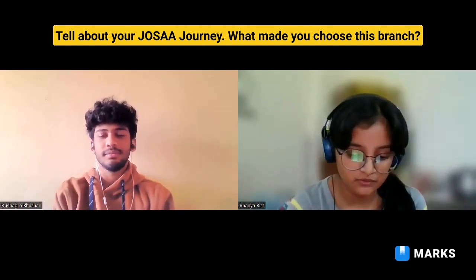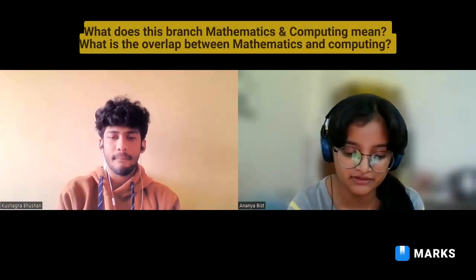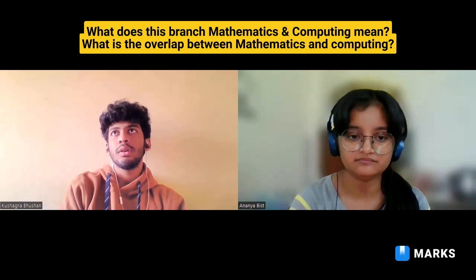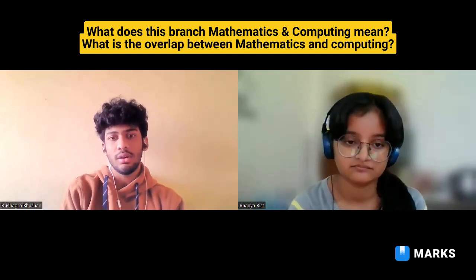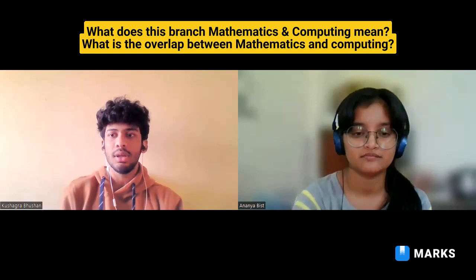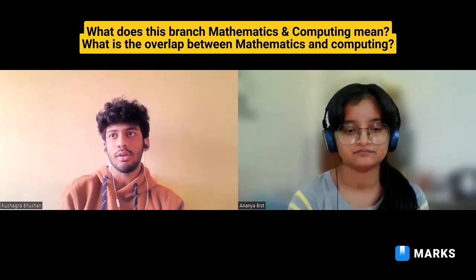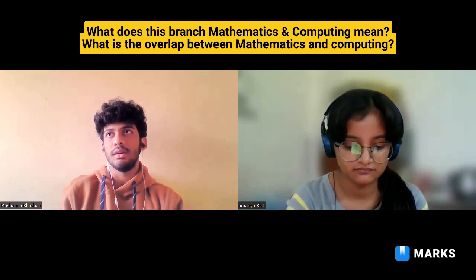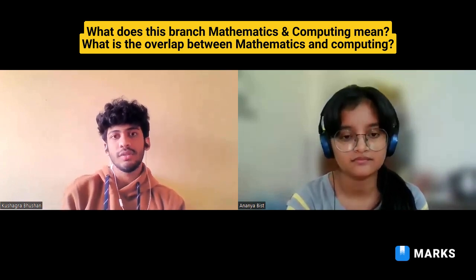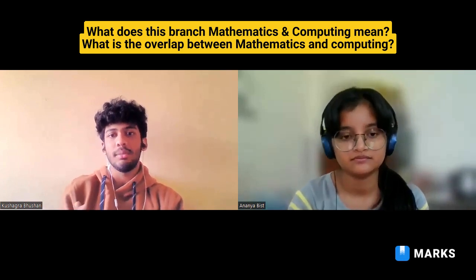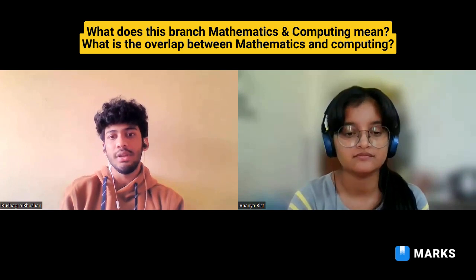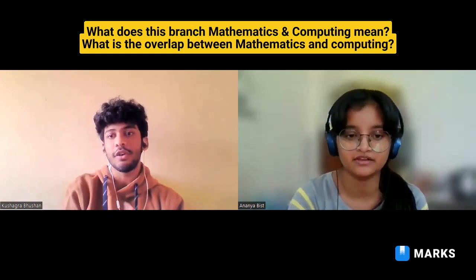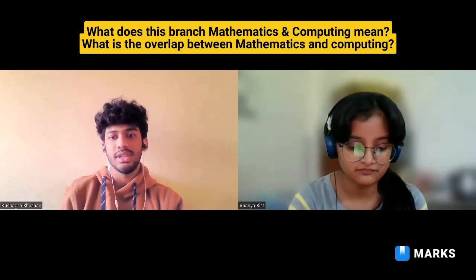What does Mathematics and Computing mean — what is the relation and overlap between maths and computing? There's quite a lot of overlap. Almost all our courses from MnC and CSC are overlapping. The overlap exists because most of the algorithms implemented in CSC have a strong mathematical backing. What we do in MnC is understand that mathematical backing in quite a bit of depth — that's where we differ from our CSC counterparts, in a more theoretical way.